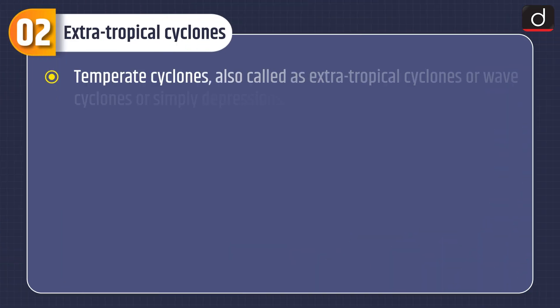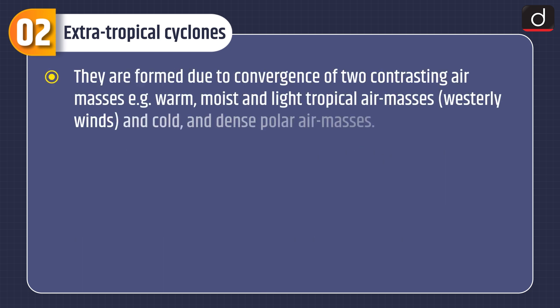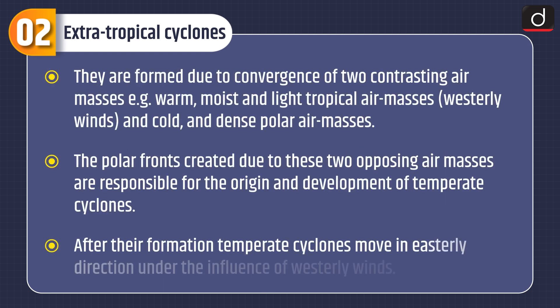Now let's discuss about extra tropical cyclones. Temperate cyclones, also called extra tropical cyclones or wave cyclones or simply depressions, are atmospheric disturbances having low pressure in the center and increasing pressure outward. They are produced in the middle latitudes, characterized by converging and rising air, cloudiness, and precipitation. They are formed due to convergence of two contrasting air masses — warm, moist and light tropical air masses with westerly winds, and cold and dense polar air masses. The polar fronts created due to these two opposing air masses are responsible for the origin and development of temperate cyclones.